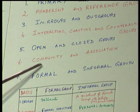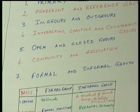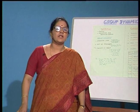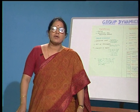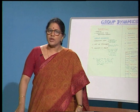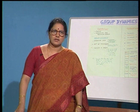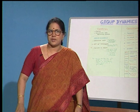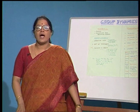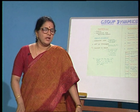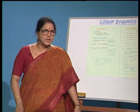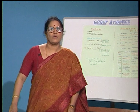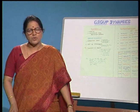Coming to the terms community and association: a community is formed by virtue of living in a particular area or belonging to a particular caste or creed. On the other hand, an association is a group which the individual voluntarily joins — such as a cultural association, a club, or a sports club.